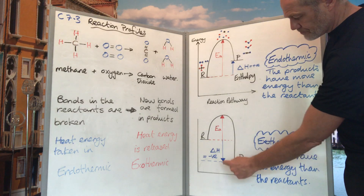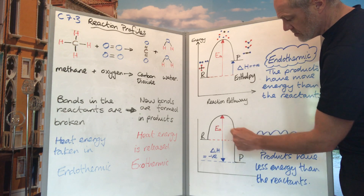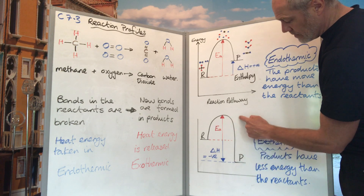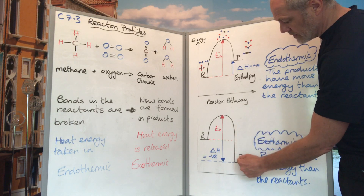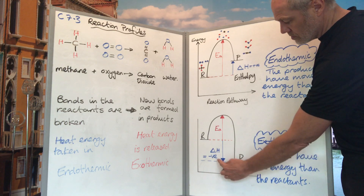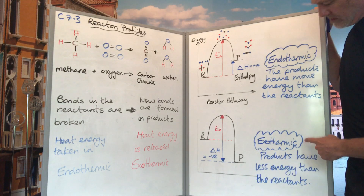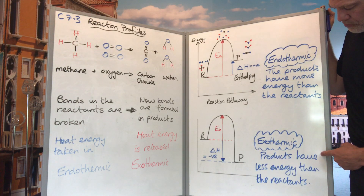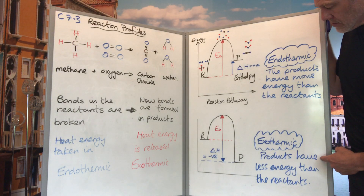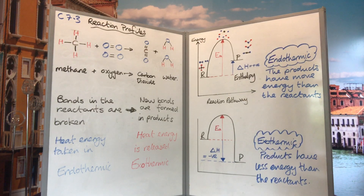So overall, in an endothermic reaction, the products have more energy than the reactants. The opposite applies in an exothermic reaction — the activation energy to break bonds in the reactants is lower than the energy released when new bonds form. Therefore, delta H is negative, meaning it's exothermic, and the products have less energy than the reactants.